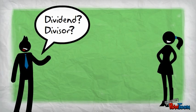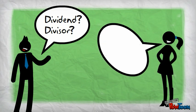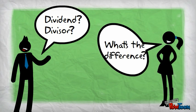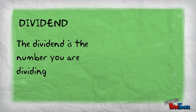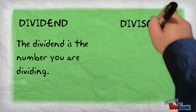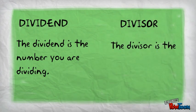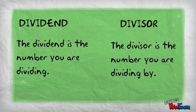What is the dividend and what is a divisor? What's the difference? The dividend is the number you are dividing. The divisor is the number you are dividing by.